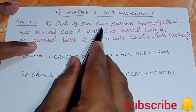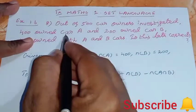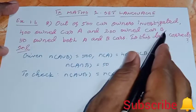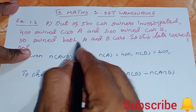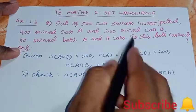See the question. Out of 500 car owners investigated, 400 owned car A and 200 owned car B, 50 owned both A and B cars. Is this data correct?